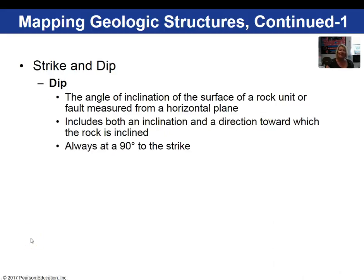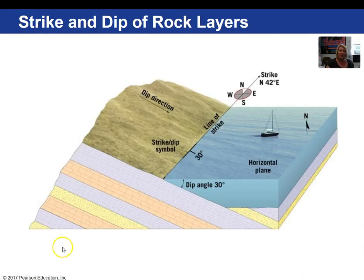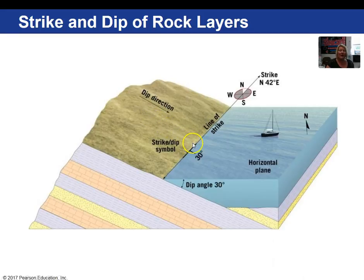If a rock layer is not horizontal with the surface then we refer to it as having a dip. Strike and dip are always 90 degrees to each other. Our Brunton compass can measure the dip of a rock layer. Looking at this picture, I often find it easier to determine the dip direction before the strike. If you were to pour water down this rock layer, it would roll in a certain direction — that tells you the dip direction.